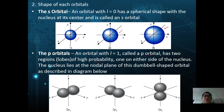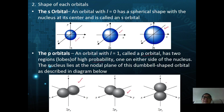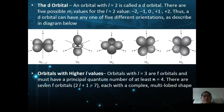The p orbital, with l equals 1, has two regions or lobes of high probability on either side of the nucleus. The nucleus lies in the nodal plane of this dumbbell-shaped orbital. There are three p orbitals: px lying along the x-axis, py along the y-axis, and pz along the z-axis.